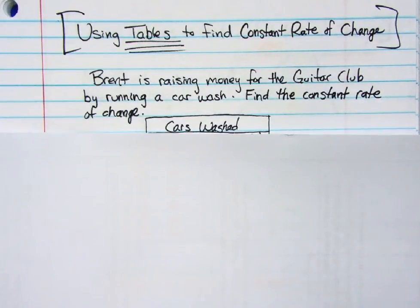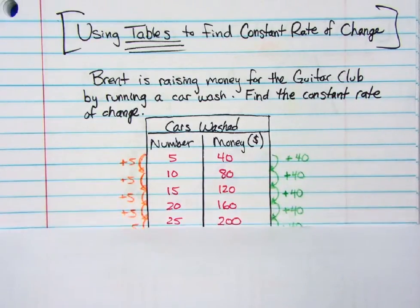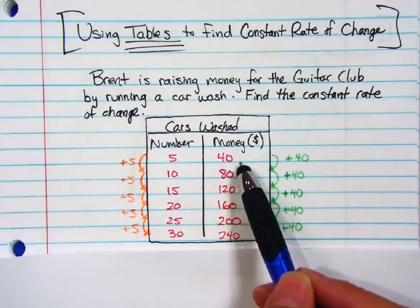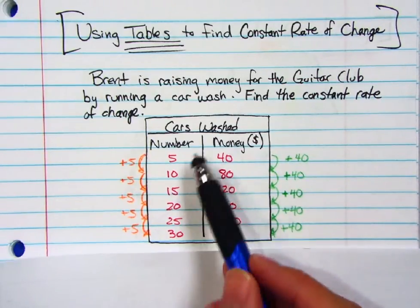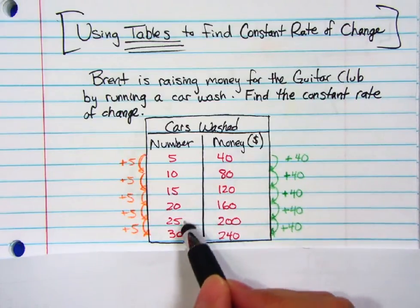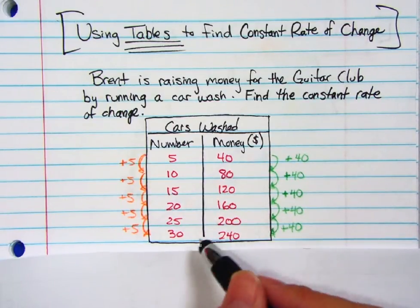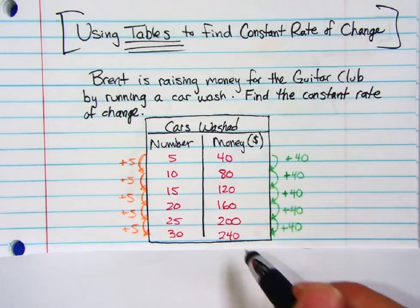So Brent is raising some money for the guitar club by running a car wash. Find the constant rate of change. Here's the information: for 5 cars it's $40, for 10 cars it's $80, 15 cars is $120, 20 cars is $160, and for 25 cars it's $200, and so on.